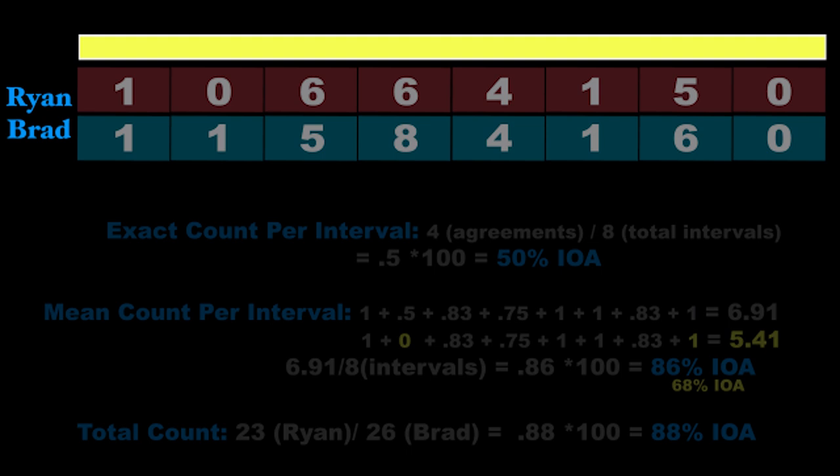As you can see, based on the type of inter-observer agreement you choose, you get completely different accounts of agreement. On total count — which, by the way, is the worst one you can do — we had 88%. On mean count per interval we had 86%, and on exact count we had 50%. Overall not too bad. Exact count is clearly more strict than the others, and total count is the weakest. Imagine if I had 23 observations of meow in the first interval and zero in the remaining seven, and Brad had zero for the first seven and 26 in the eighth — we'd still have 88% IOA, but we never saw the behavior happen at the same time.